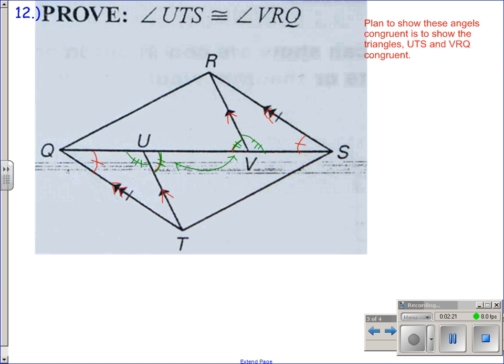Now what you have is congruent triangles. You have triangle QUT congruent to triangle SVR. Those two triangles are congruent because of angle-angle-side. With those triangles being congruent, that gives you segment QU congruent to segment SV. That's a key part. This is by corresponding parts of congruent triangles being congruent, CPCTC.